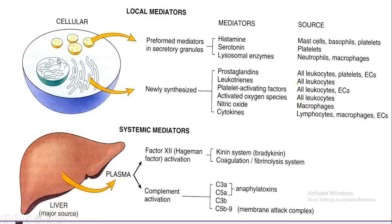This chart shows the local mediators, which were derived from preformed mediators or newly synthesized mediators from cells. The most commonly involved cells in producing these mediators were mast cells, platelets, and leukocytes, especially neutrophils.